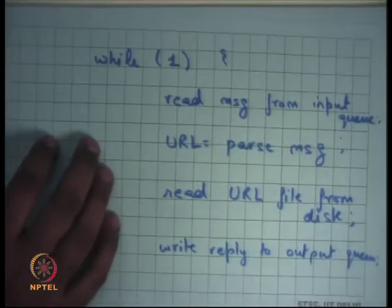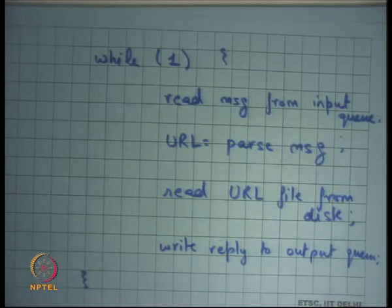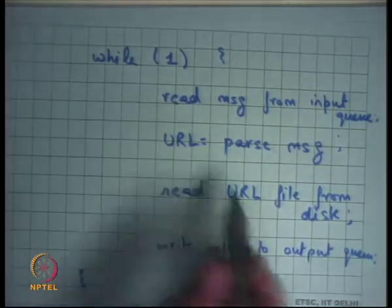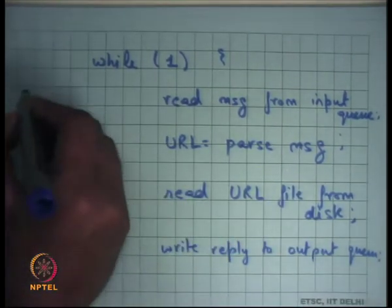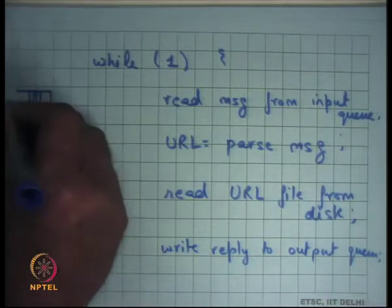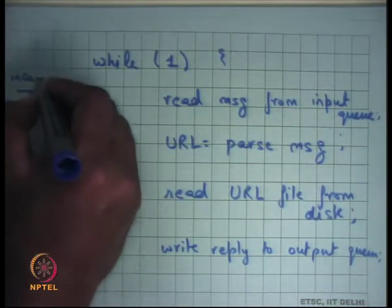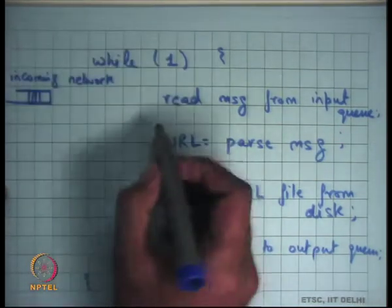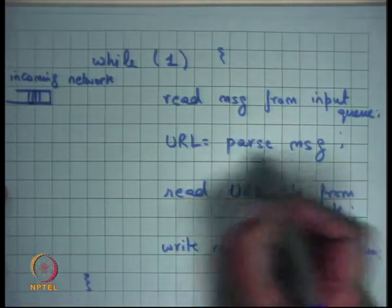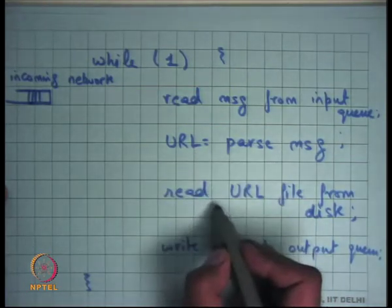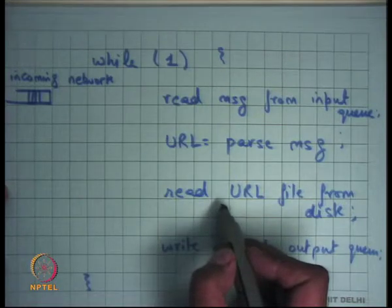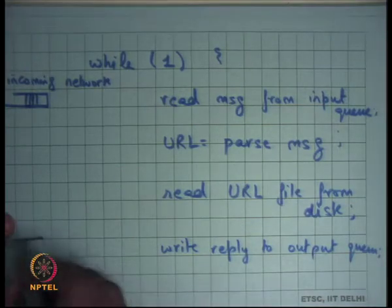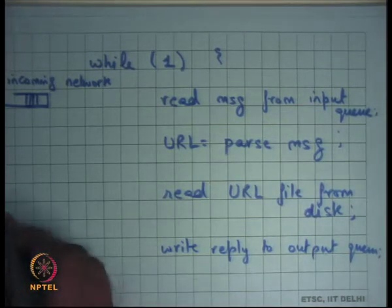This is the pseudo code of the web server. You have an infinite loop that reads messages from an input queue — the incoming network queue — parses the message, obtains a URL from the message, reads a file from the disk corresponding to that URL, and writes the message to an output queue.